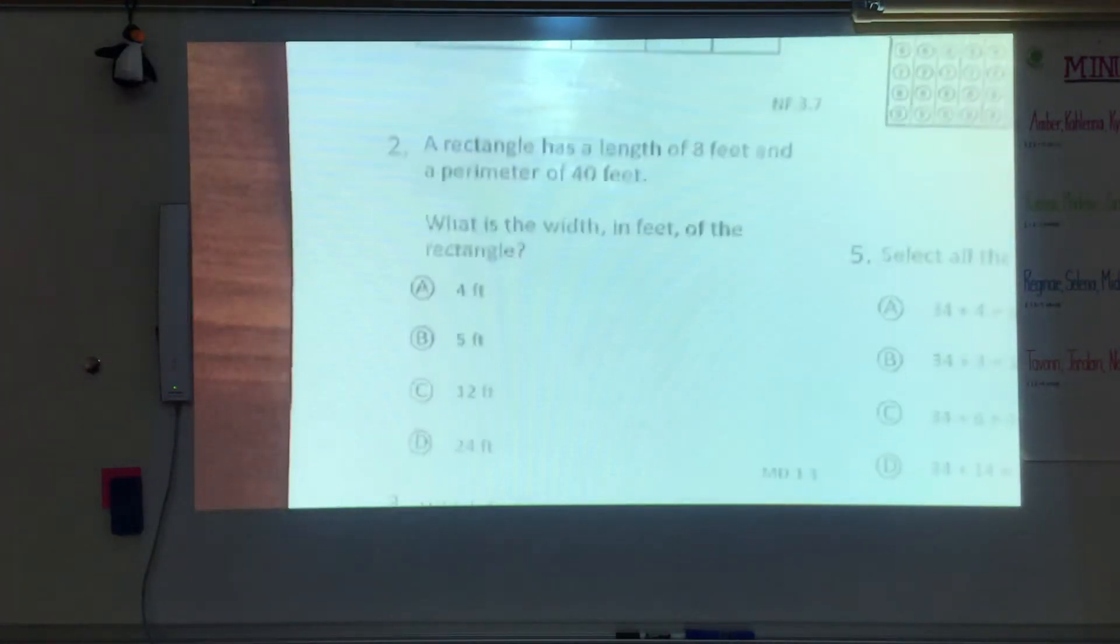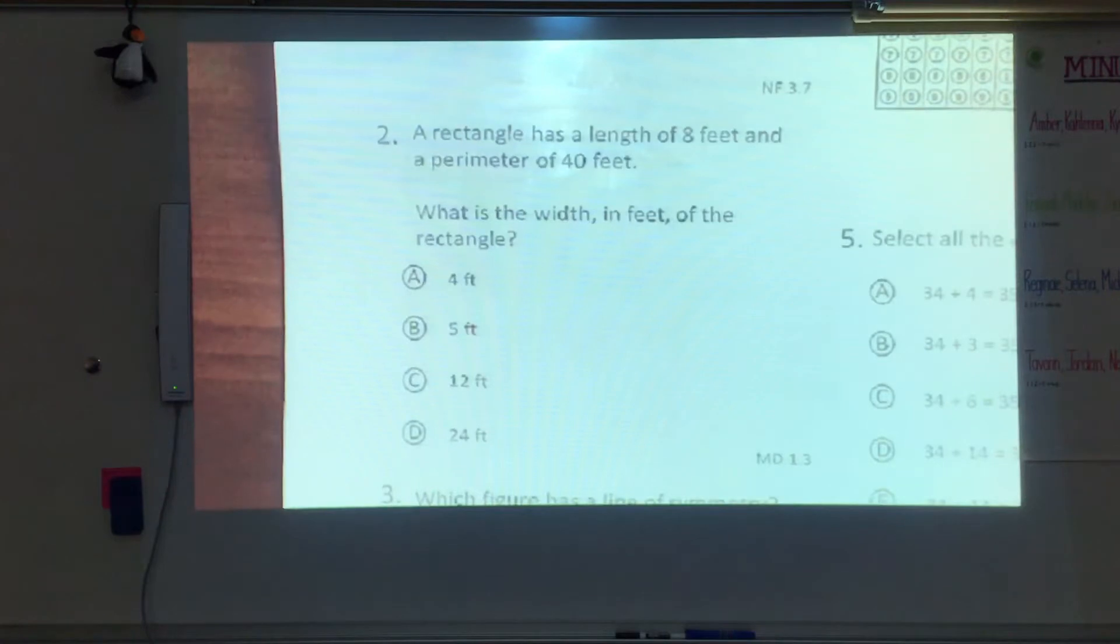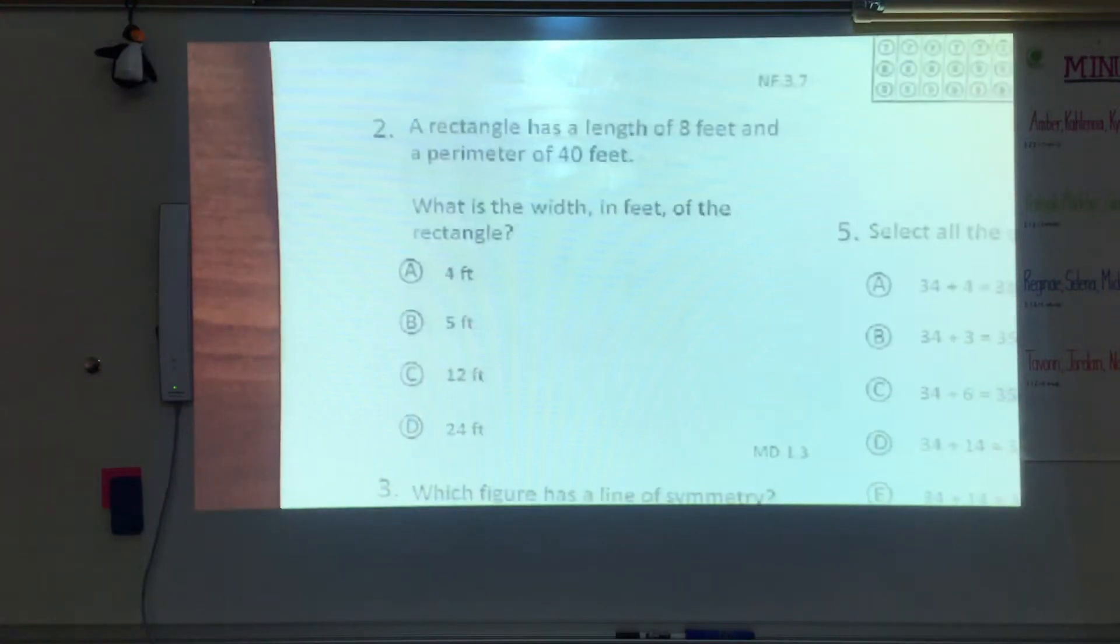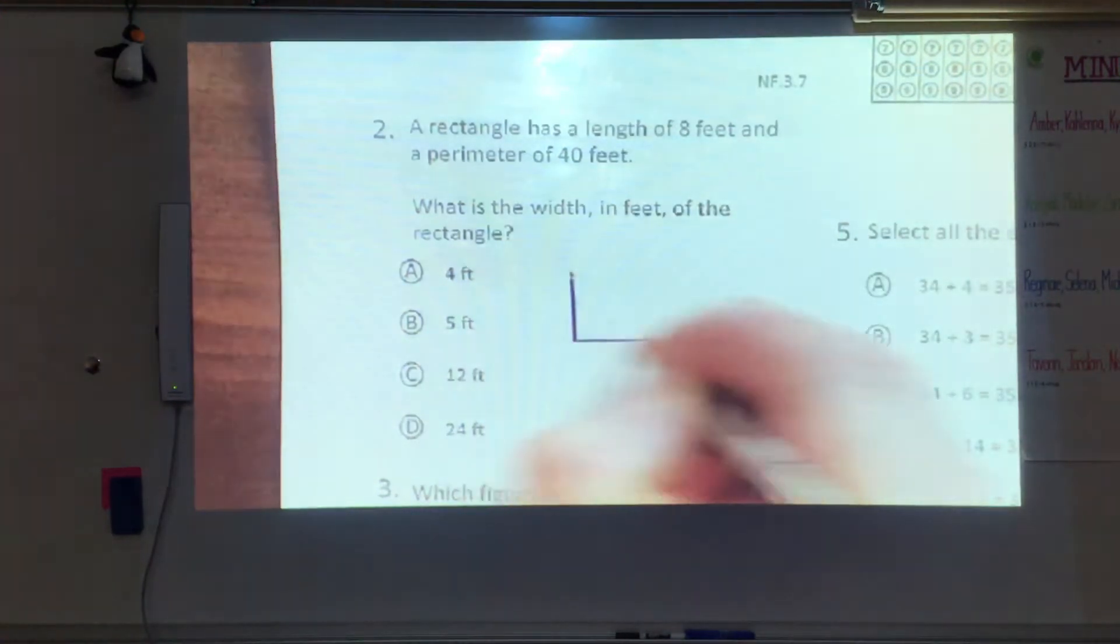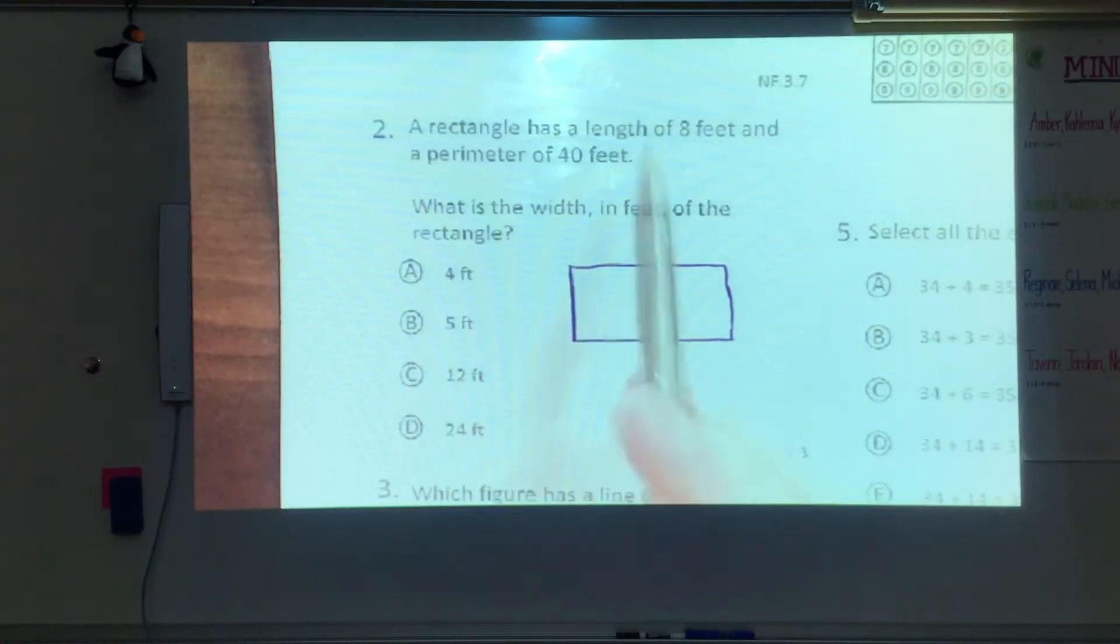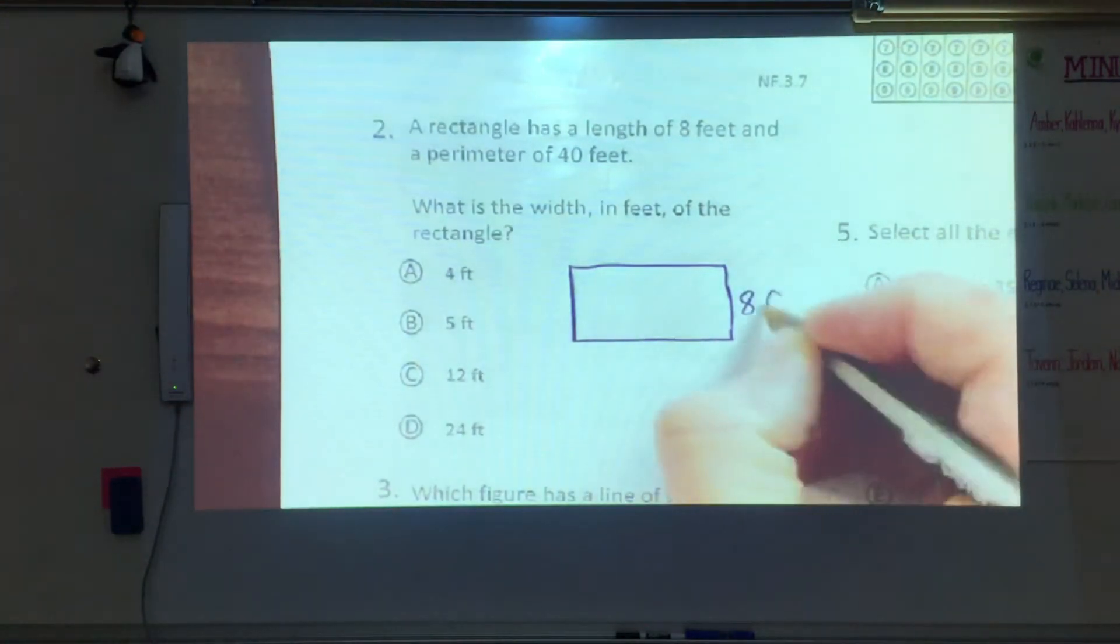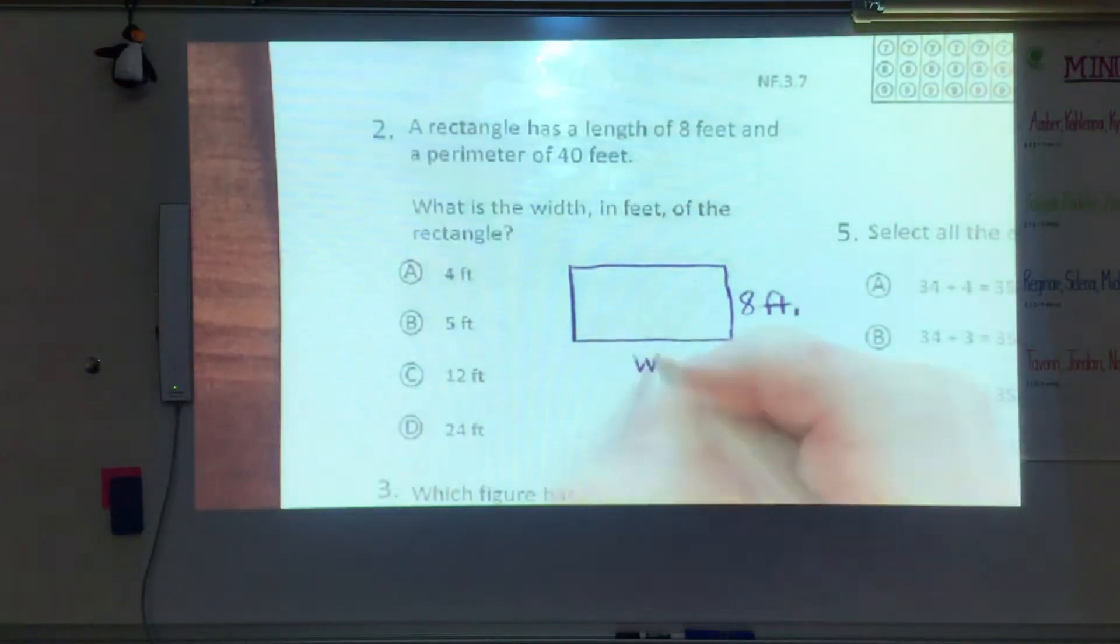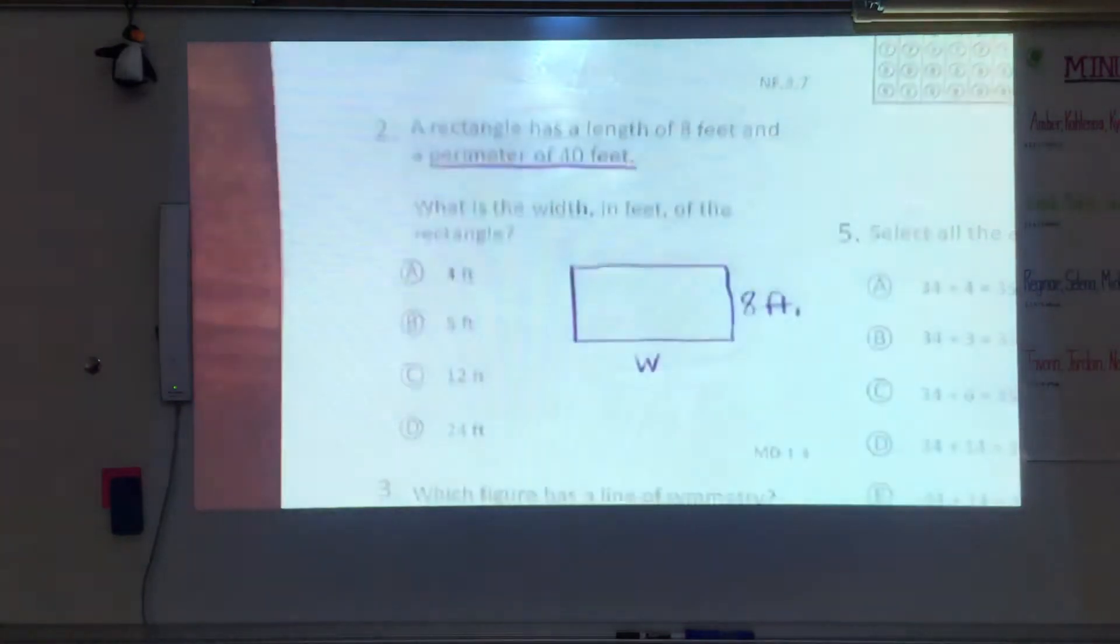Alright, a rectangle has a length of 8 feet and a perimeter of 40 feet. What is the width in feet of the rectangle? Well the first thing I'm gonna do is I'm gonna draw my rectangle. I know that the length is 8 feet and I'm trying to figure out what the width is, but I know that the perimeter which goes all the way around is 40 feet.